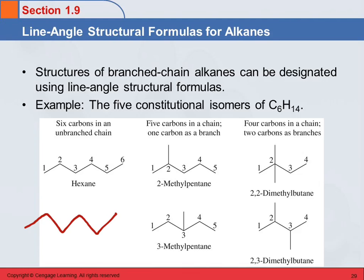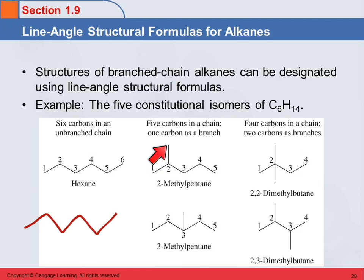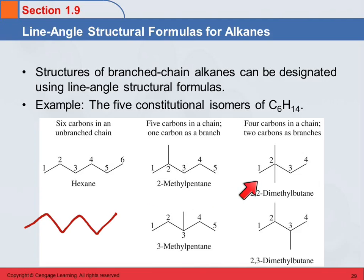In a branched chain like this, here is a branched chain alkane — pentane with five carbons in the longest chain, and then there's a methyl group. There's a carbon at this end and a carbon at that end; it's not attached to any other carbons, so it must have three hydrogens on it. The methyl group is on the second carbon, so this has the name 2-methylpentane. This is butane with four carbons in the longest chain and two methyl groups on the second carbon: 2,2-dimethylbutane.